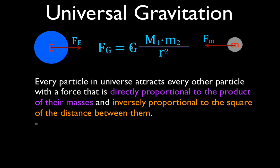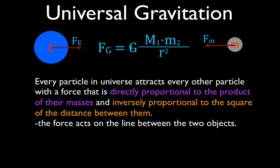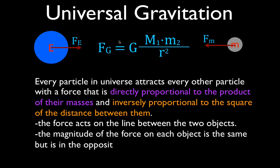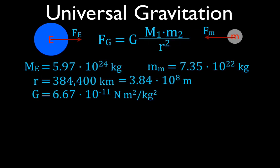A couple of other things to point out: the force acts on a straight line between those two objects. The magnitude of the force on each object is the same, but it acts in the opposite direction. So the magnitude of the force on the Earth from the Moon equals the magnitude of the force on the Moon from the Earth, but they point in opposite directions. It's an attractive force — they always attract each other. There are no repulsive forces with gravitation.